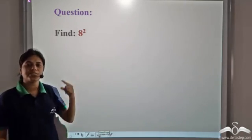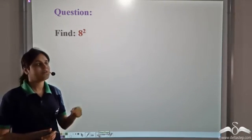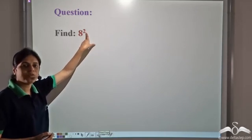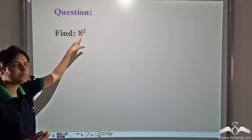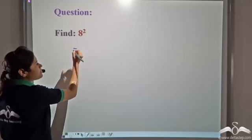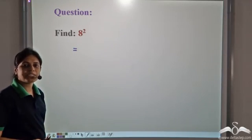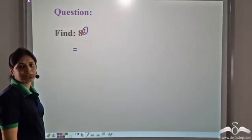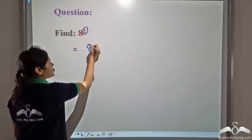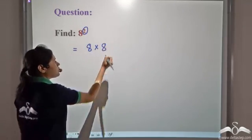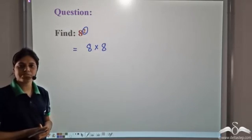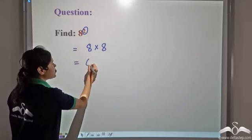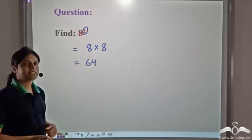So now can you find this? Well, this is 8 to the power 2. Eight is the base here — 8 is the number which is being multiplied — and how many times is it multiplied? It is multiplied 2 times. So this is 8 into 8, that is 8 multiplied 2 times, and 8 into 8 is 64. So this is equal to 64.